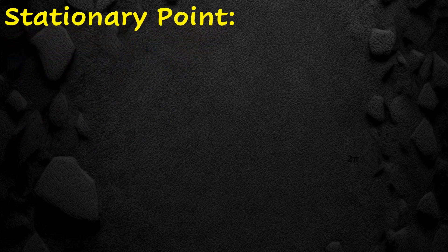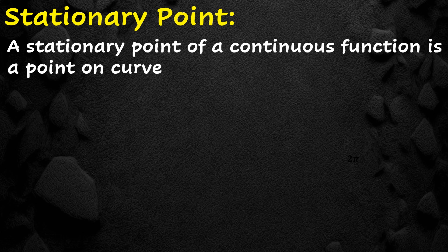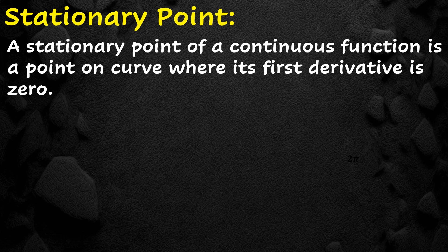A stationary point of a continuous function is a point on the curve where its first derivative is zero. The first derivative gives the slope of the tangent line to a curve at a certain point. So if f'(x) equals zero, the slope of the tangent line is zero, which means the inclination of the tangent line is zero, meaning the tangent line is parallel to the x-axis.